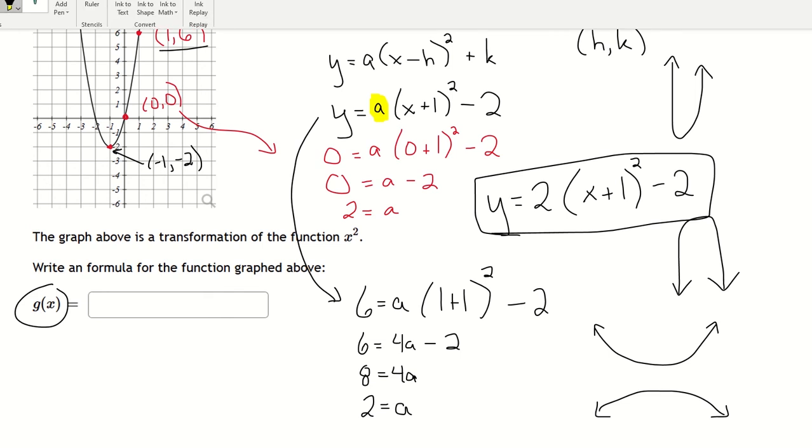So just a quick recap. You get the h value by looking at the x value of the vertex. You get the k value by looking at the y value of the vertex.